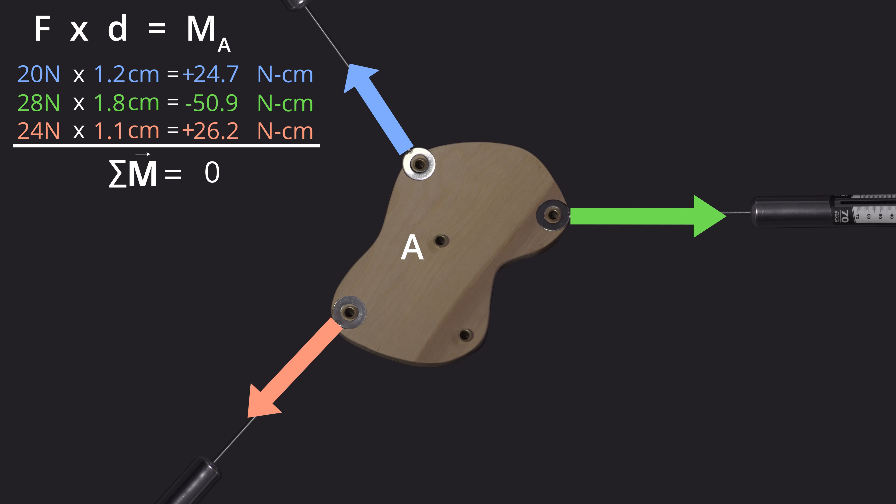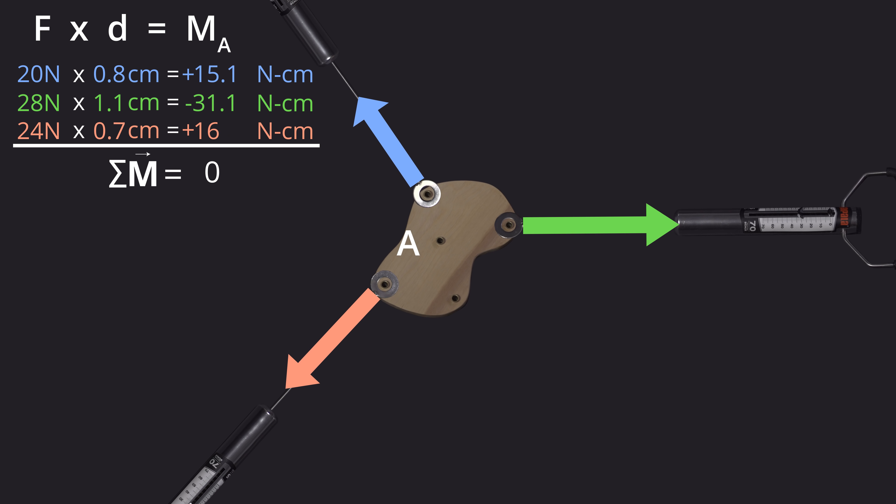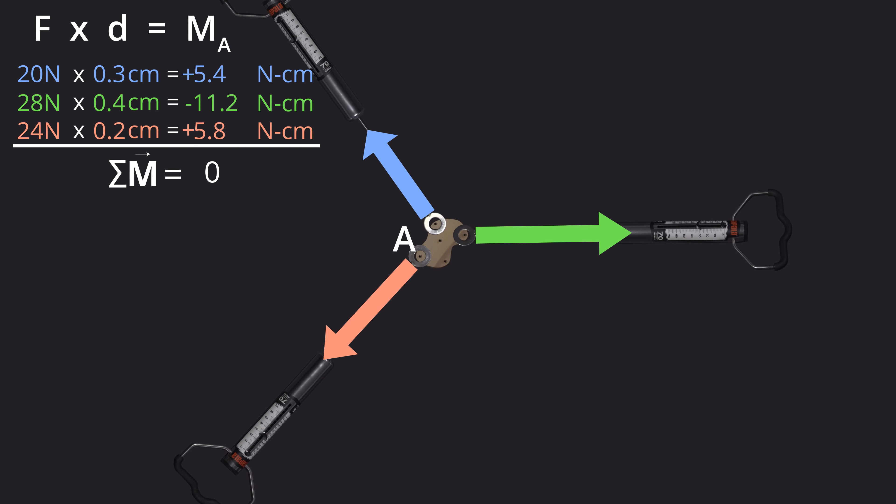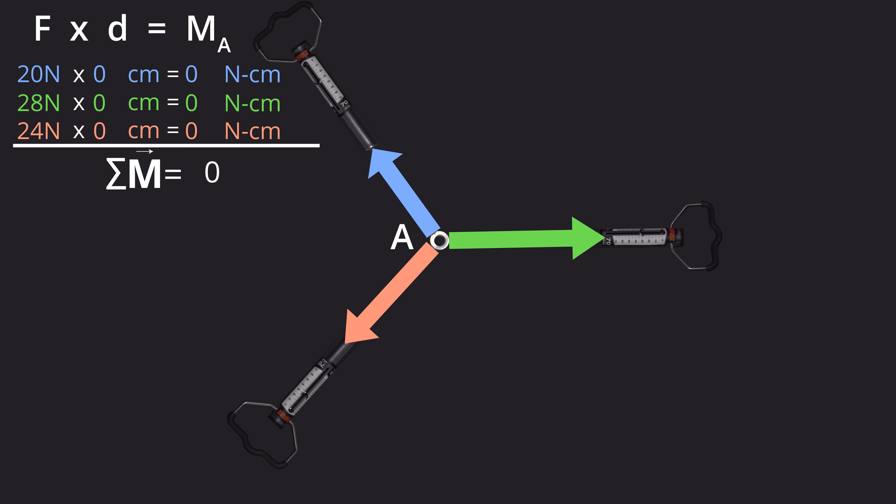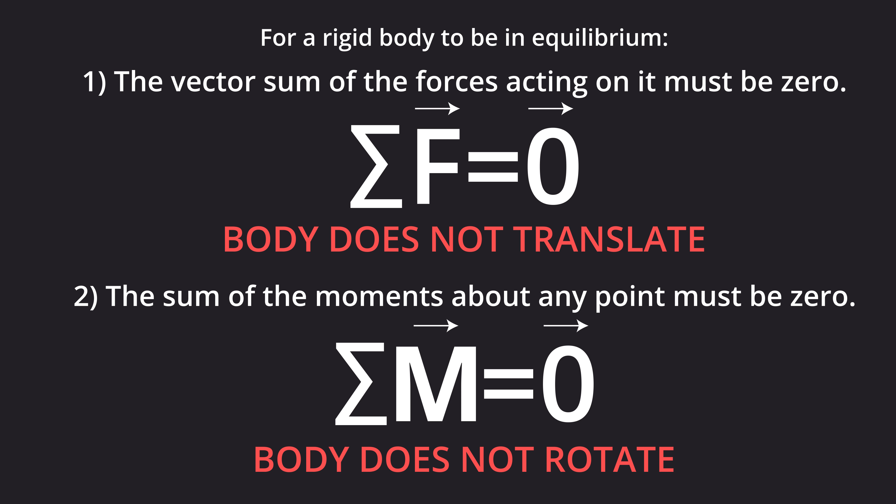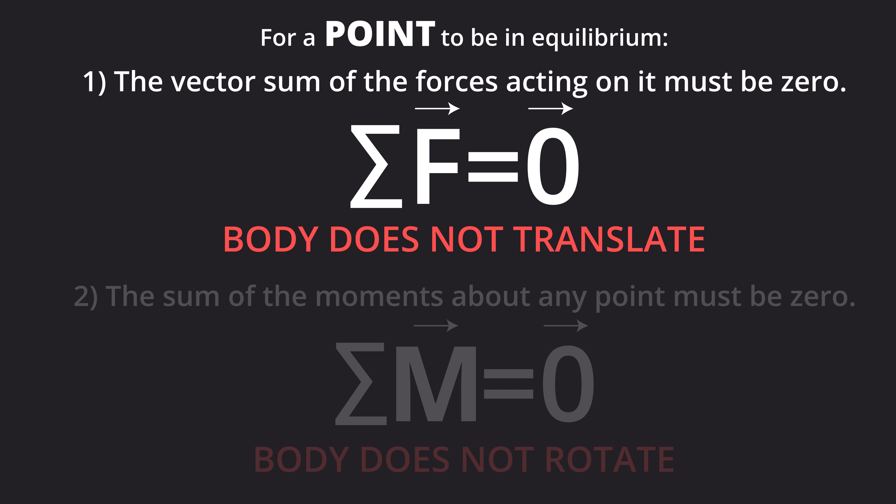If we consider equilibrium of a point rather than a body, all of the distances in the moment calculation shrink to zero, and so the sum of the moments must be zero. That is why, when we consider equilibrium of a point, we need only satisfy the sum of forces condition. The sum of moments criterion is automatically satisfied.